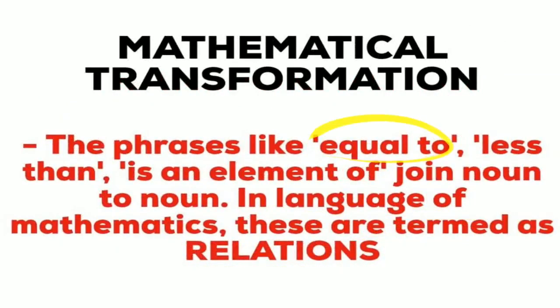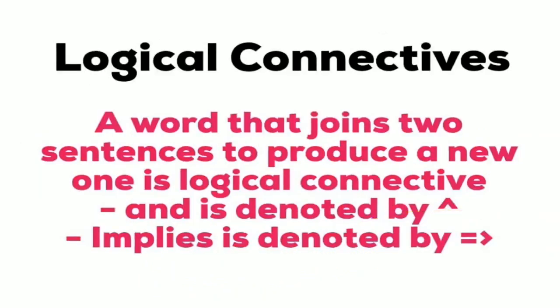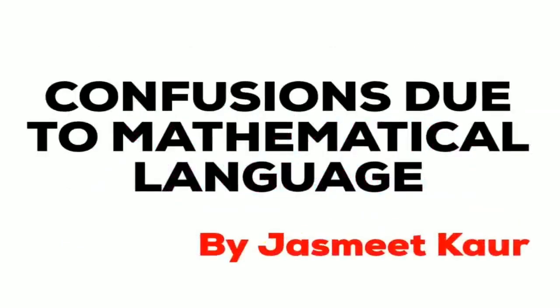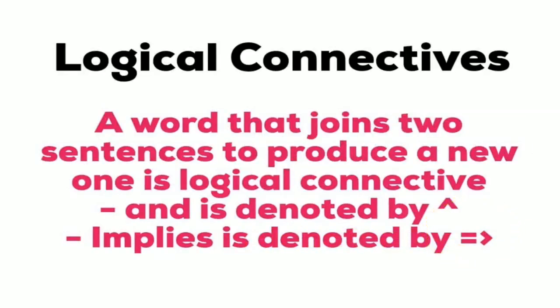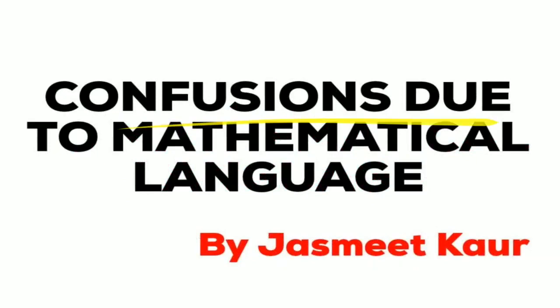Phrases like 'equal to' and 'less than' express a relation - they join one noun to another noun and show a relationship between them. These are termed as relations. Next is logical connectives - a word that joins two sentences to produce a new one is a logical connective. For example, 'and' can be denoted by a symbol, and 'implies' is denoted by an arrow symbol, forming a new sentence.